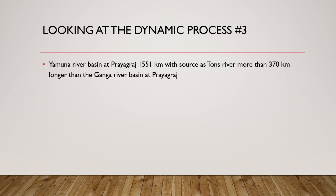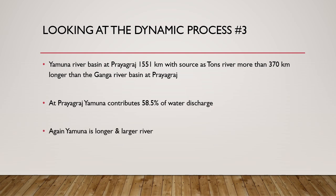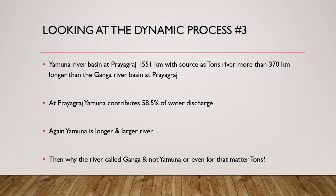The third dynamic process is the confluence of Yamuna and Ganga at Prayagraj — the Triveni Sangam. At Prayagraj, Yamuna has a source length of 1,551 kilometers, which because of the Tons addition is about 370 kilometers more than Ganga. Yamuna is not only a longer river than Ganga, but also a larger one — it has 58.5 percent of the water discharge, while Ganga accounts for only 41.5 percent.